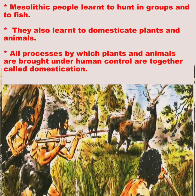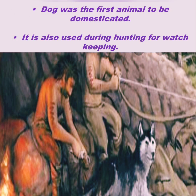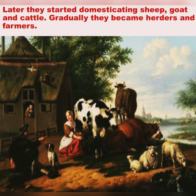All processes by which plants and animals are brought under human control are together called domestication. The dog was the first animal to be domesticated. It was also used during hunting and for watchkeeping. Later, they started domesticating sheep, goat, and cattle. Gradually, they became herders and farmers.